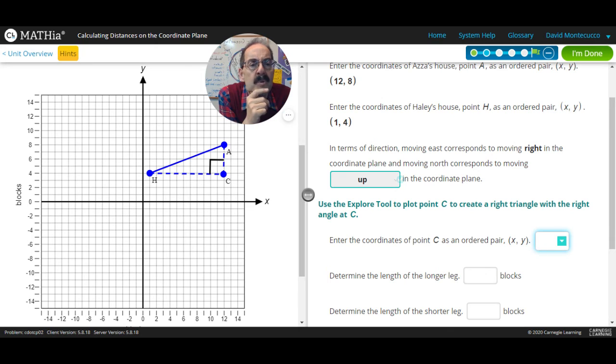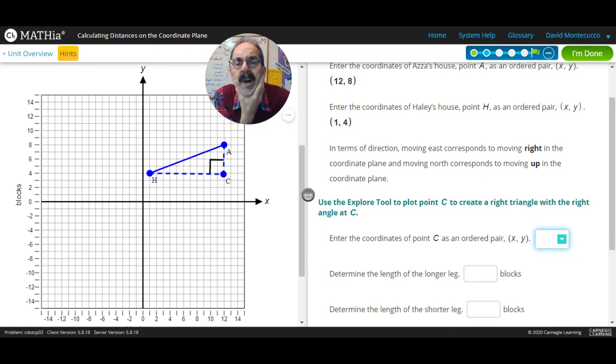Enter the coordinates of point C such that we do have a right triangle. What's that? 12, 4. Yeah. 12, 4.